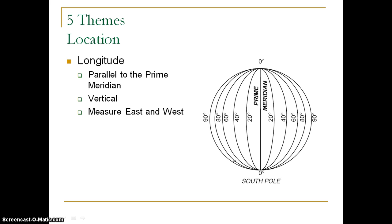Lines of longitude are also called meridians because they run parallel to the prime meridian, which runs through Greenwich, England at zero degrees longitude. A helpful memory trick: 'latitude is flatitude' — think of latitude lines lying flat or horizontal across the Earth's surface. Longitude lines run north and south but measure degrees east and west of the prime meridian. So 20 degrees west, 40 degrees west, 40 degrees east, and 20 degrees east are all measurements from the prime meridian.